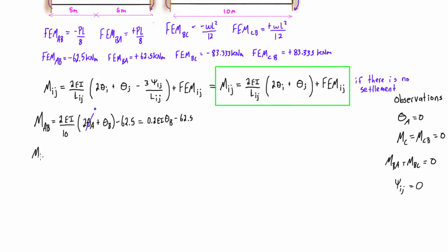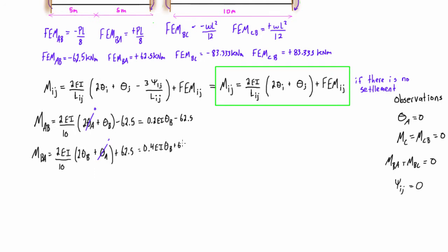For M-BA, we plug in B's for the I's and A's for the J's. We get 2EI over 10, times 2 theta-B plus theta-A, plus the fixed end moment BA which is positive 62.5. Cancelling theta-A since it's zero, this reduces to M-BA equals 0.4 EI theta-B plus 62.5.